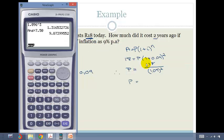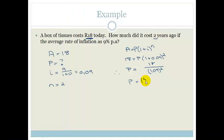So we go 18 divided by bracket 1.09 bracket squared equals. So it's 15.15. So two years ago, I was paying 15 rand and 5 cents for my box of tissues, and now I'm paying 18 rand.